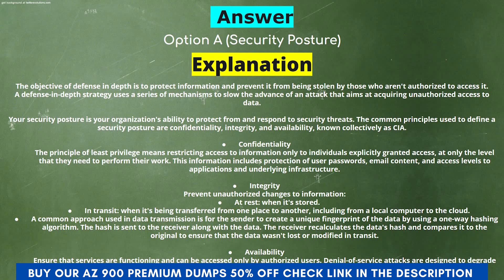Confidentiality: The principle of least privilege means restricting access to information only to individuals explicitly granted access, at only the level they need to perform their work. This includes protection of user passwords, email content, and access levels to applications and underlying infrastructure. Integrity: Prevent unauthorized changes to information at rest (when stored) and in transit (when being transferred). A common approach is for the sender to create a unique fingerprint of the data using a one-way hashing algorithm.